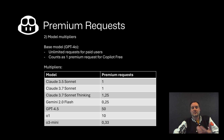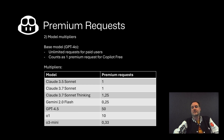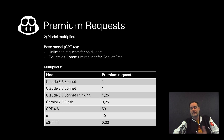Gemini 2.0 Flash only counts as a quarter of a premium request, so you can make up to four times more of those requests. Claude is usually what people use these days as the standard. O1 has a 10x multiplier, so be aware of those kinds of limitations.